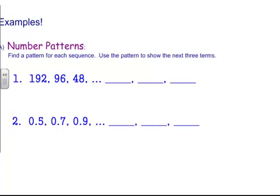Okay, the first example we're going to talk about is number patterns. For our number patterns, we're going to first have to use inductive reasoning, meaning we have to discover the pattern. What I notice with my patterns is first of all, my numbers 192 and 96 and 48 are going down.